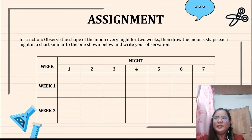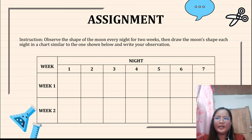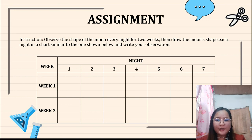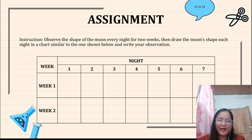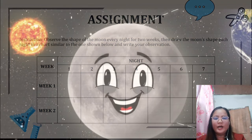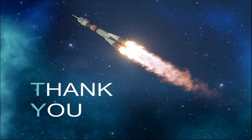For your assignment, you need to observe the shape of the moon every night for two weeks. Draw the moon's shape each night in a chart similar to the table I am showing you, and write your observations. You can use this table or make your own, as long as it covers two weeks. Do you have any questions about the assignment? No questions — very good. That's all for today. Thank you, everyone. Have a great day!